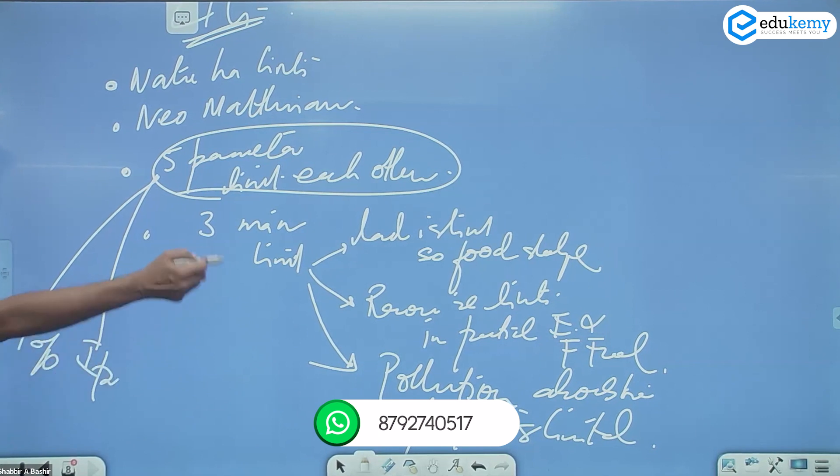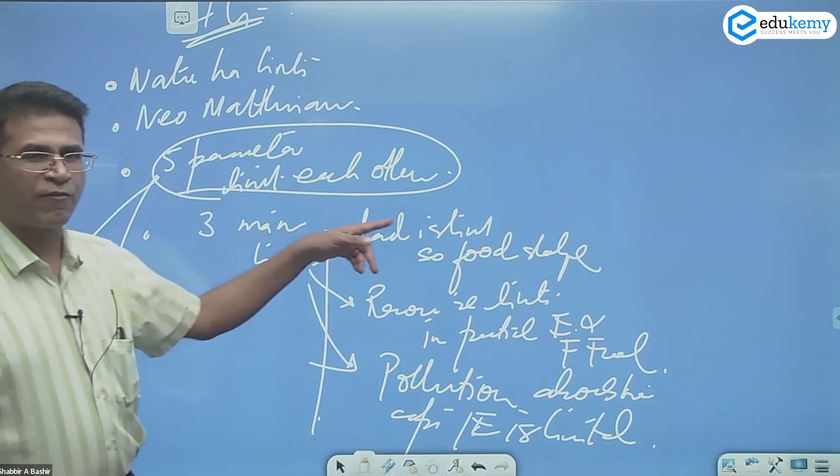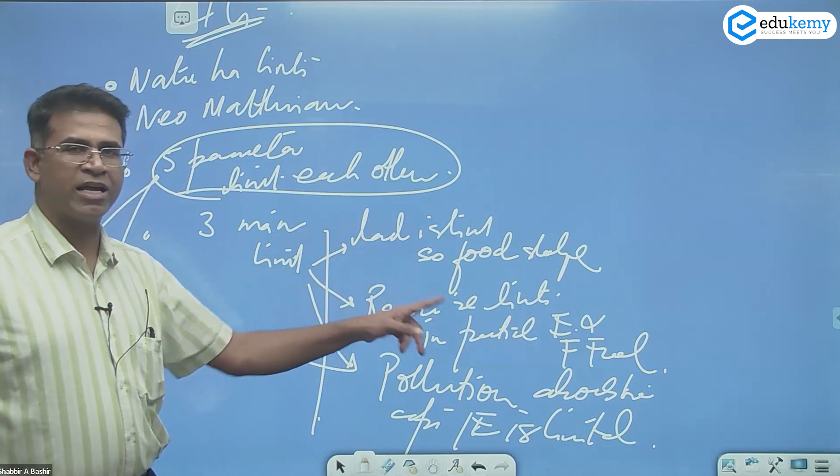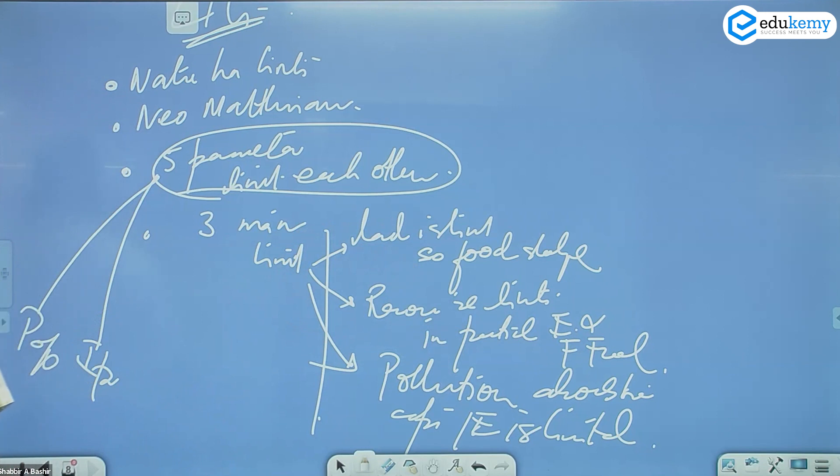Nature has limits. Neo-Malthusian five parameters that limit each other: population, industrial production, and urbanization; land and food limits; resource and energy fossil fuel limits; and pollution absorption limit. How much pollution can the earth absorb? This is more or less the summary of limits to growth.